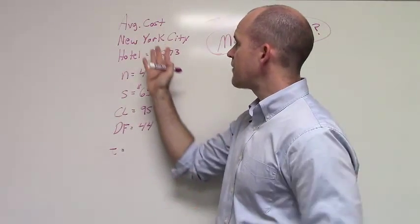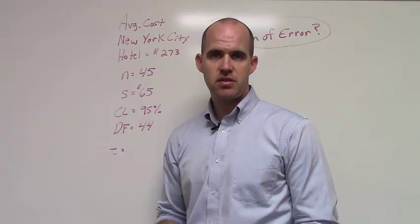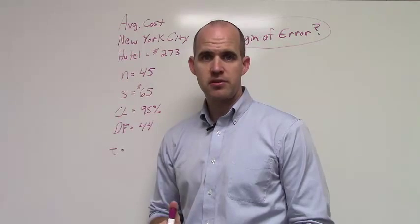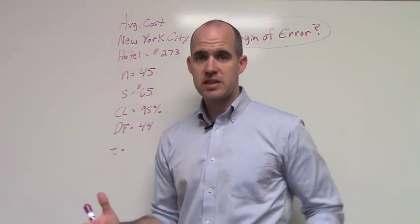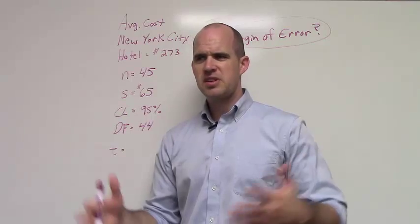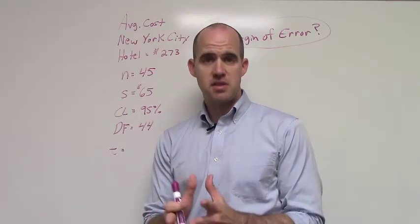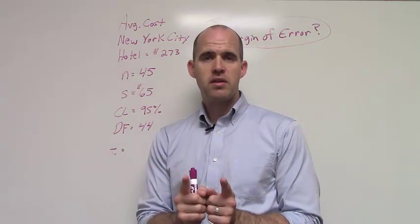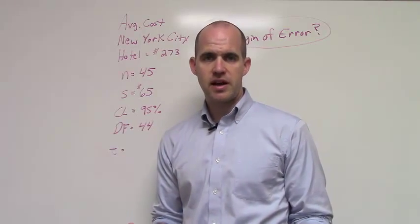Imagine that the average cost for a New York City hotel is $273. And this is based upon a sample of 45 hotels. Now, the question becomes, how accurate is that? That's 45 hotels, but does that reflect every single hotel as far as the mean in downtown New York City? Well, maybe, maybe not. So, we need a margin of error in order to figure that out.